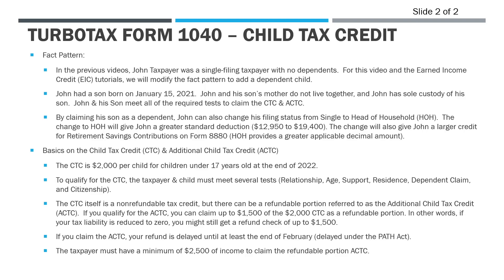The other thing that it'll change is the retirement savings credit. In the previous tutorials, we looked at Form 8880 to claim a credit for contributions to his traditional IRA. By switching to head of household, it actually increases his credit — we'll see that it doubles — because the head of household filing status gives you a greater factor to multiply by the amount of the contribution.